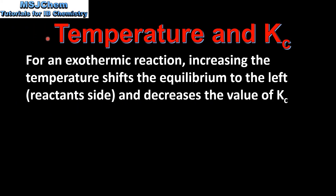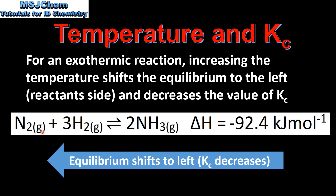Let's look at the effect of temperature on the value of Kc. For an exothermic reaction, increasing the temperature shifts the equilibrium to the left — the reactant side — and decreases the value of Kc. For the Haber process, since the forward reaction is exothermic, increasing the temperature shifts equilibrium to the left and Kc decreases.